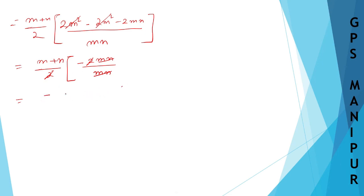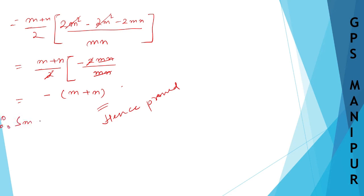Therefore S_(m+n) = (m+n)/2 × (−2) = −(m+n). This is what we were asked to prove. Therefore, the sum of the first (m+n) terms is equal to −(m+n). That's all — thank you so much, we'll meet in the next video.